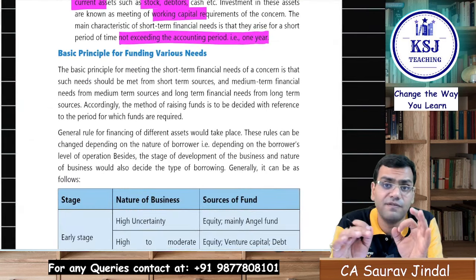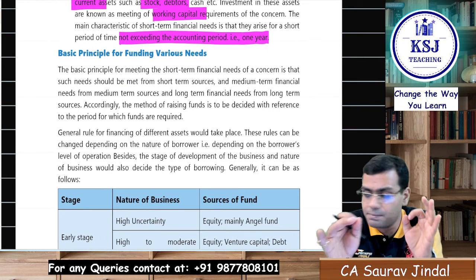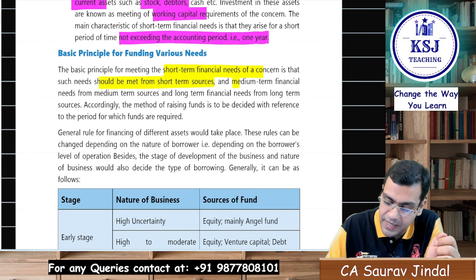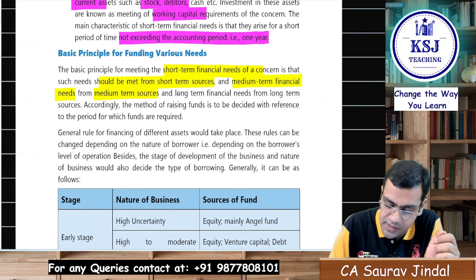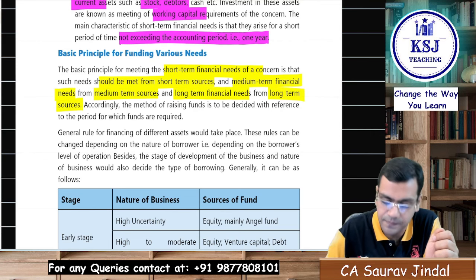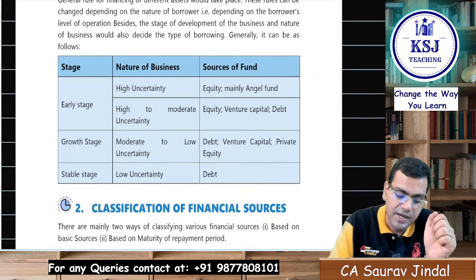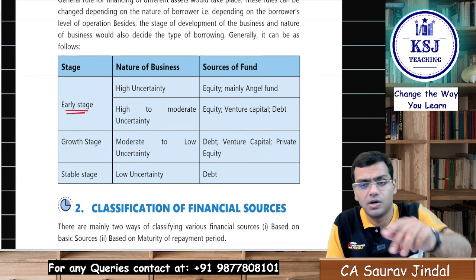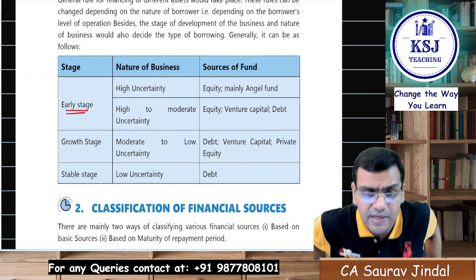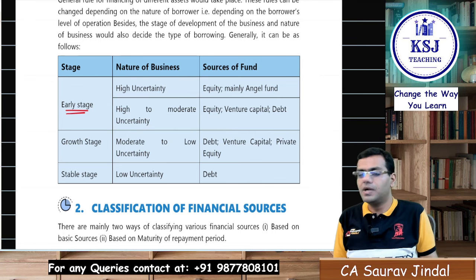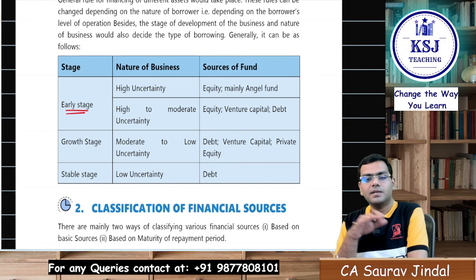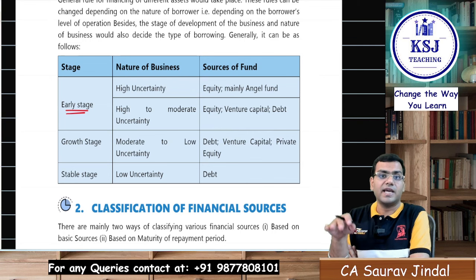The basic principle for funding the various needs is: short-term financial needs should be met from short-term sources, medium-term financial needs from medium-term sources, and long-term financial needs from long-term sources. Accordingly, the method will be selected — and one way is depending upon the stage at which your business is operating, based on the product life cycle, which we have already studied in strategic management.